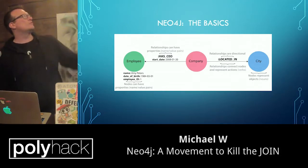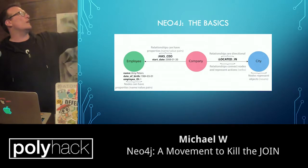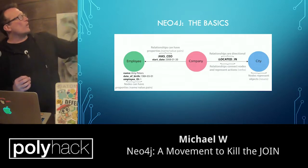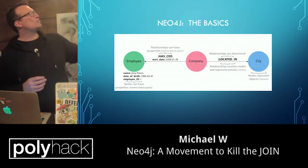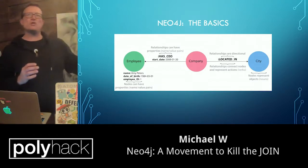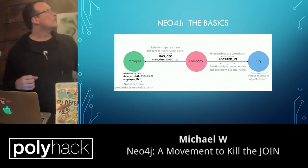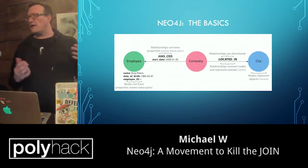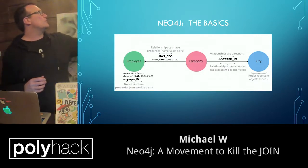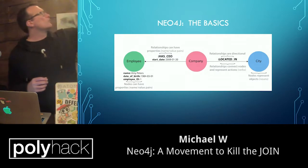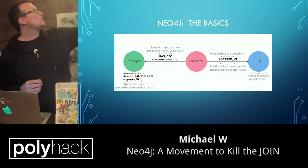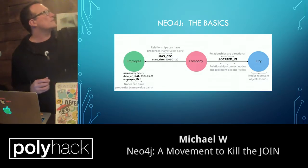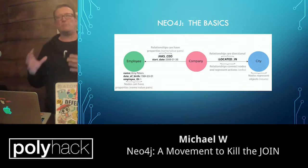A couple of things about Neo4j — some basics. What we're doing here is we're actually storing data inside nodes. Each node actually has a set of properties, and then we also have a bunch of relationships which relate each of these nodes. The relationships themselves can also have properties. So we can look here at this particular example. We have a node called employee, and it actually has a number of different types of properties, such as the name, the date of birth, and the employee ID. We also have a relationship 'has CEO', which also has an attribute to it — which is start date.